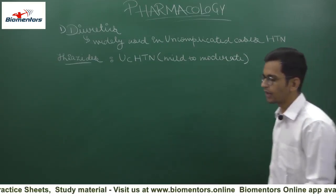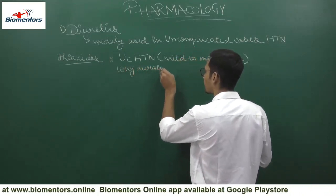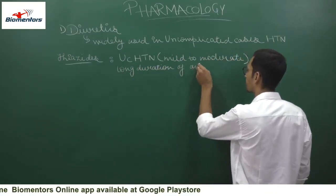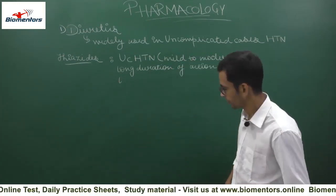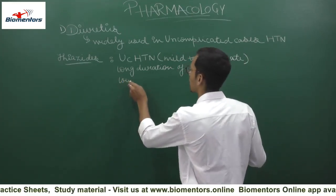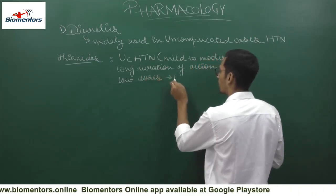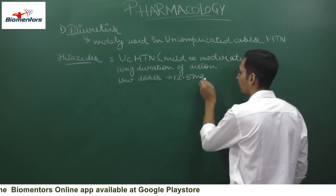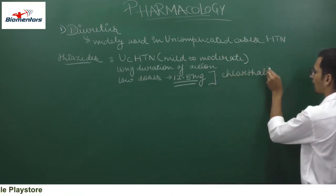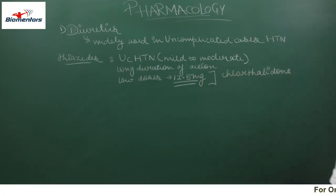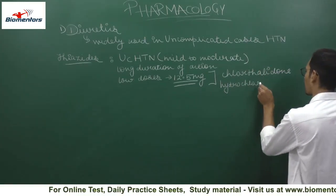Thiazides have a long duration of action, and because of this they are administered in low dosage. The dose is 12.5 mg. We have thiazide-like drugs such as chlorthalidone and hydrochlorothiazide.